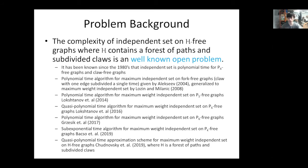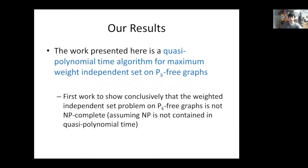Lastly, we have Chudnovsky et al. in 2019, giving a quasi-polynomial time approximation scheme for maximum weight independent set on H-free graphs, where H is a forest of paths and subdivided claws. Our result presented today is a quasi-polynomial time algorithm for maximum weight independent set on Pk-free graphs. This is the first work to conclusively show that the weighted independent set problem on Pk-free graphs is not NP-complete, assuming NP is not contained in quasi-polynomial time.